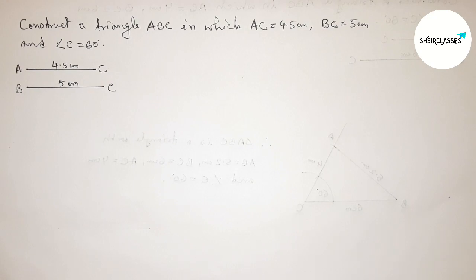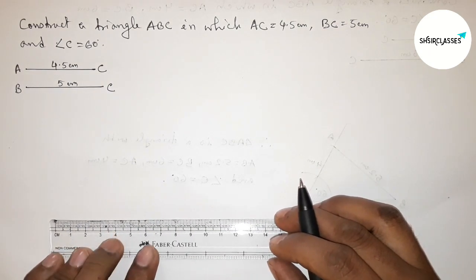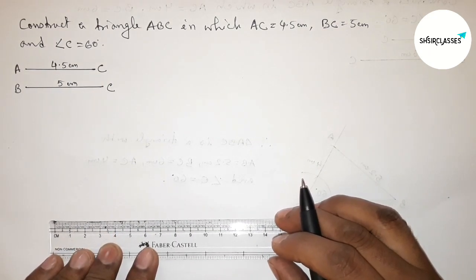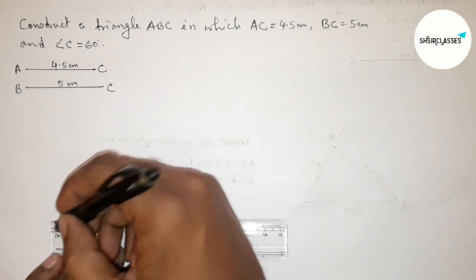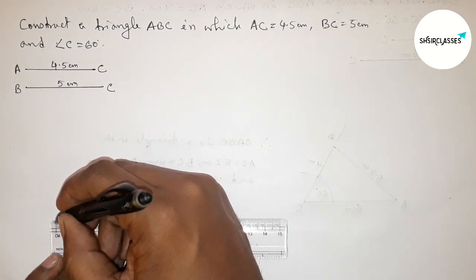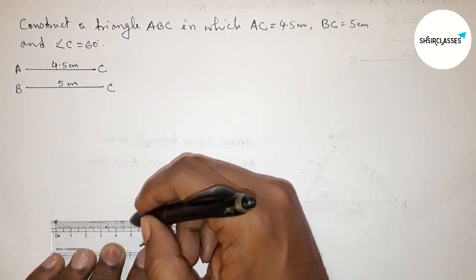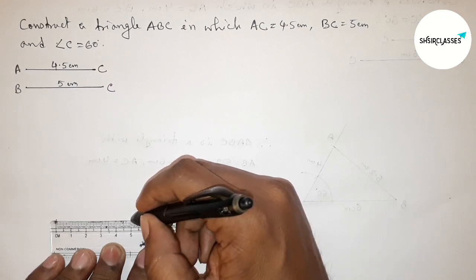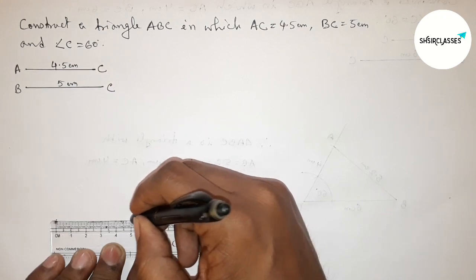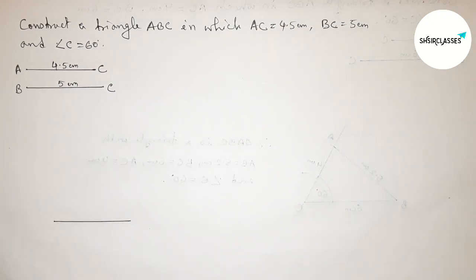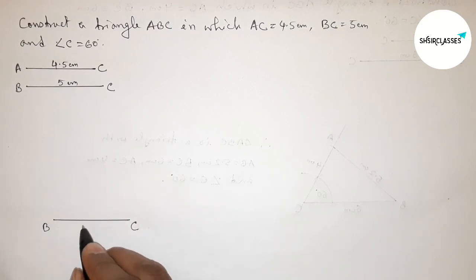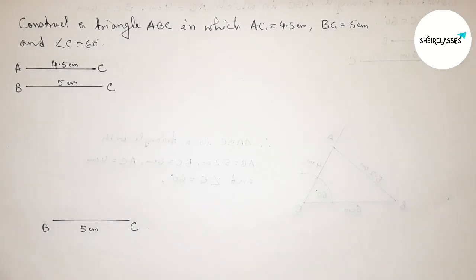Now we have to draw the line BC equals 5 centimeters. Starting from zero, this is 5 centimeters. Taking here points B and C — this is 5 centimeters. Now drawing a 60 degree angle at point C.